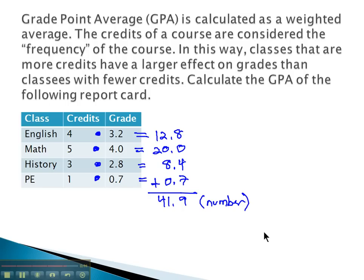We need to divide by how many there were, how many entries were made into it, how many credits did we take. 4 plus 5 plus 3 plus 1 is 13. That's the number of credits he signed up for.